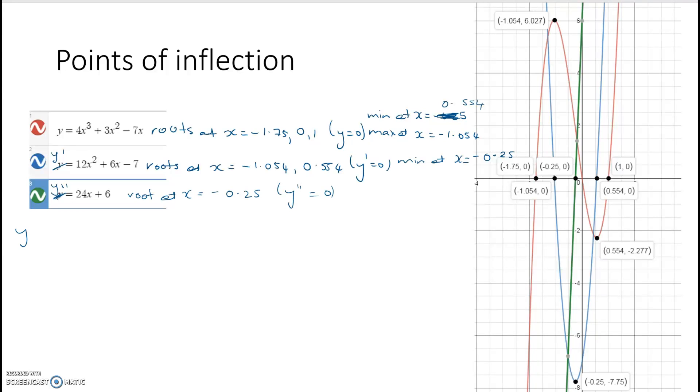Now, y and y dash are linked, because this is how we find where the min or the max are. Then the first derivative and the second derivative are linked, because that tells us how we decide on whether it's a max or a min.